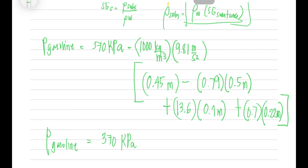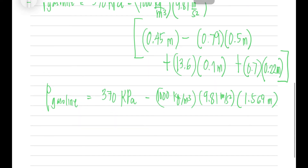Simplifying the bracket: 0.79 times 0.5 = 0.395, minus 13.6 times 0.1 = 1.36, plus 0.7 times 0.22 = 0.154, minus 1 times 0.45 = 0.45. The net sum inside the bracket is approximately −1.261. Multiplying: 1000 times 9.81 times 1.261 gives approximately 15,391.89 newton per meter squared, which equals 15,391.89 Pascal. Take note of the units: kg/m³ times m/s² times m yields N/m² or Pascal.